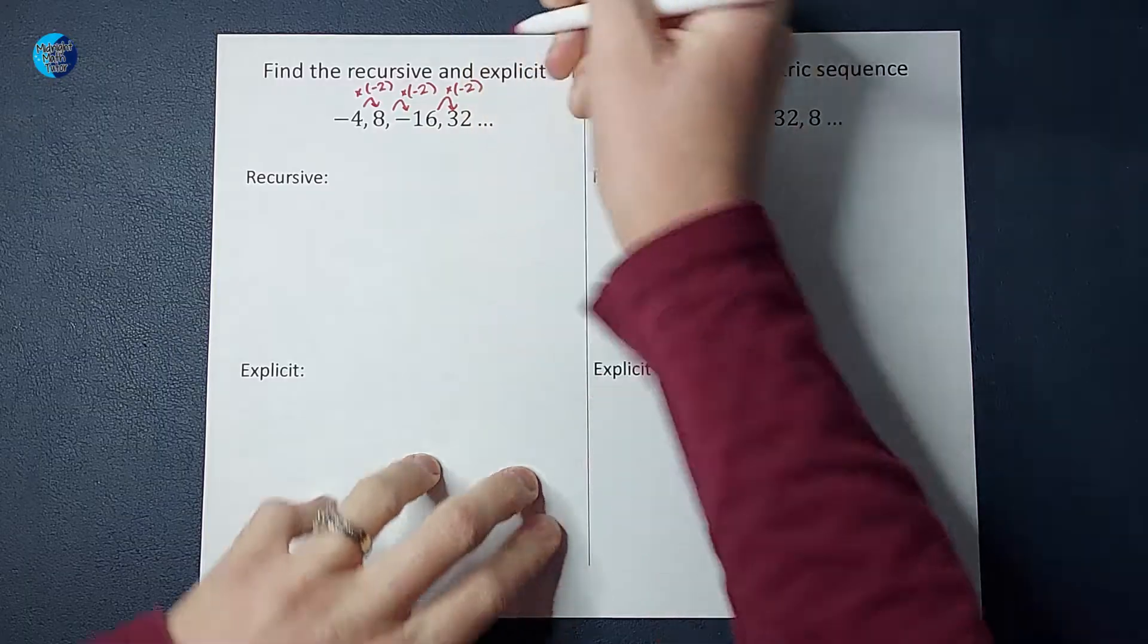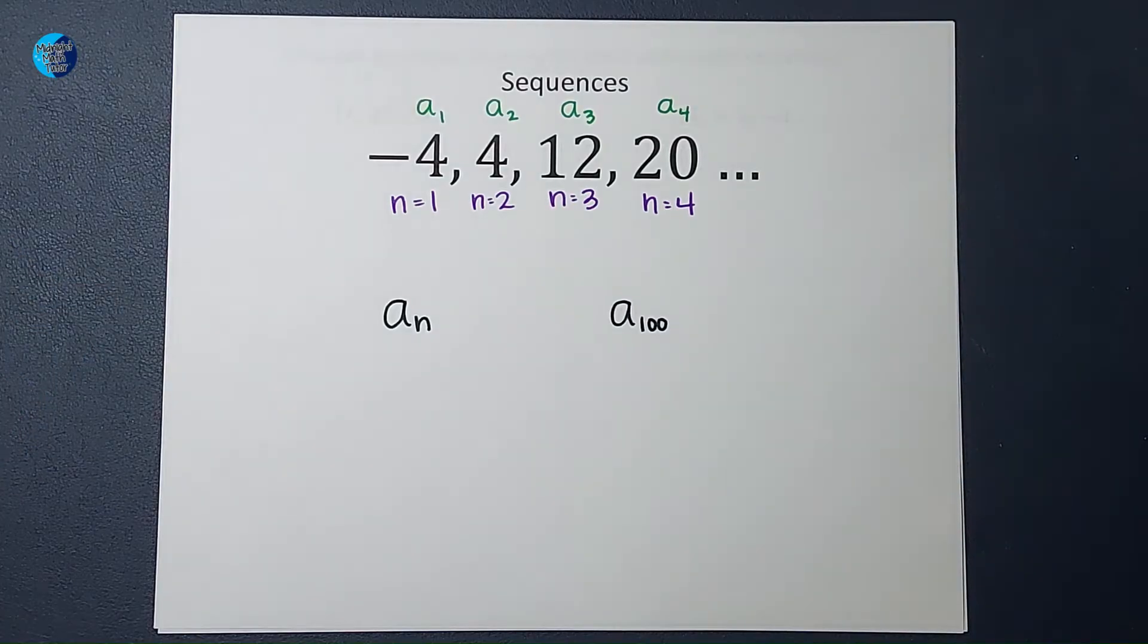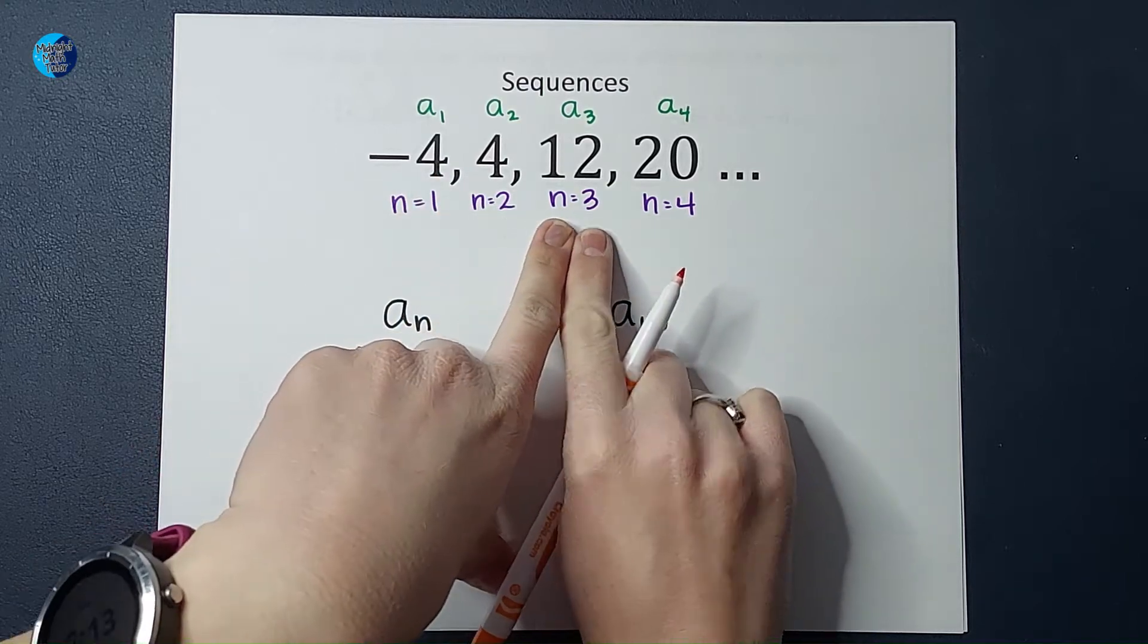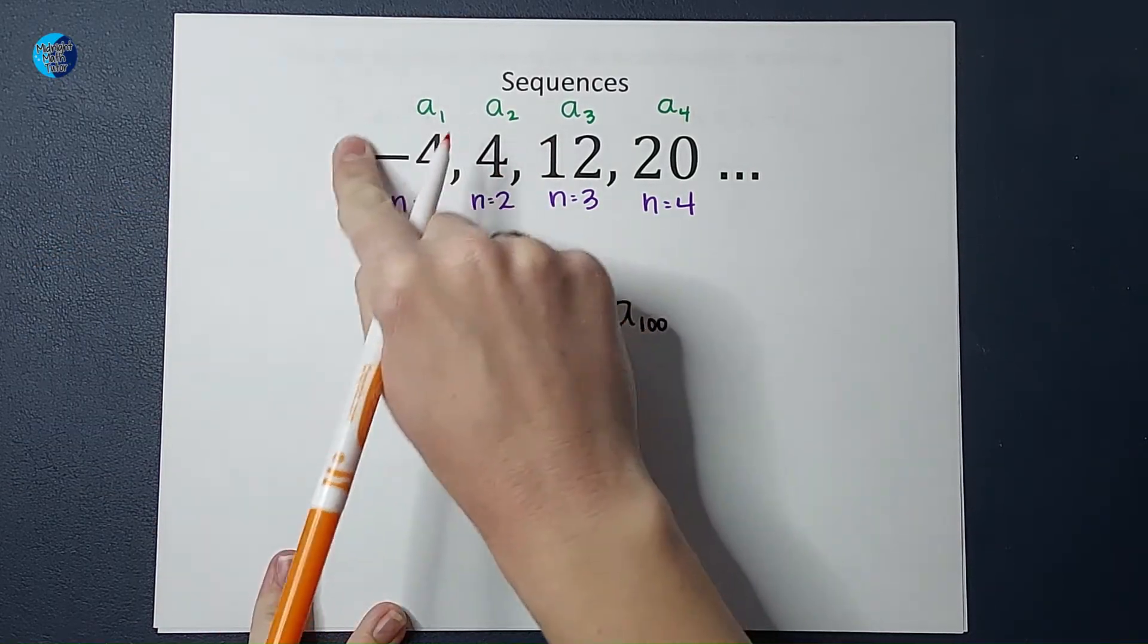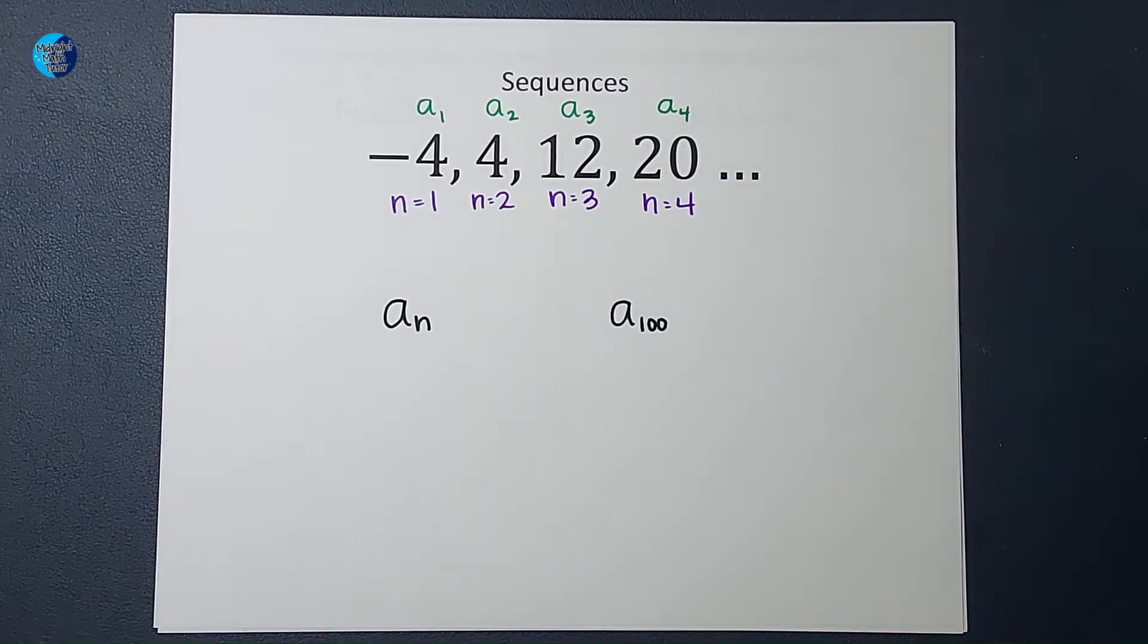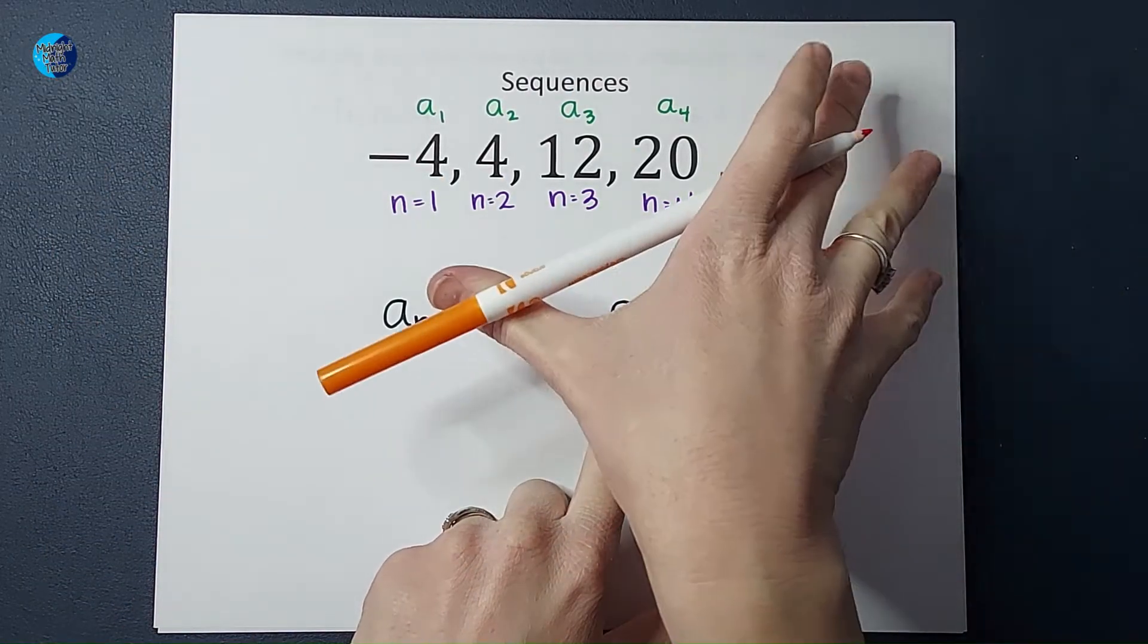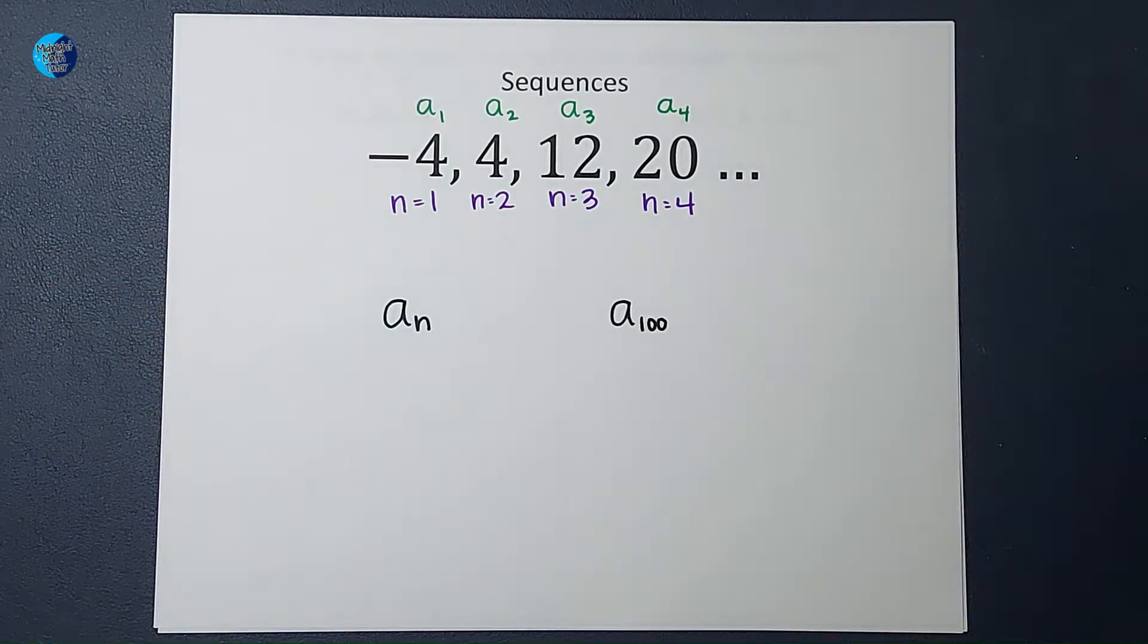We need to go over just a little bit of terminology. When you're working with these, you're going to see a lot of A's and N's. The N refers to the place it is in line, the place in the sequence. So N equals one is the first number in the sequence. When you see A with a little subscript, A sub one, that's talking about the value of that number. A sub one in this case is negative four. You're also going to see A sub N quite frequently, which is saying plug in whatever number you want for N to find that in the sequence.